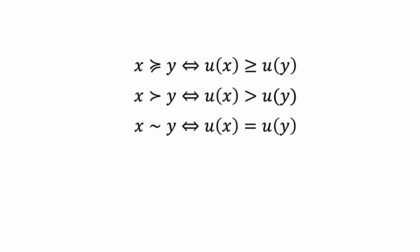The rank of those numbers gives us the preference relation. If x is weakly preferred to y, the utility of x is greater than or equal to the utility of y. If x is strongly preferred to y, the utility of x is greater than the utility of y. If you are indifferent between x and y, the utility of x equals the utility of y.